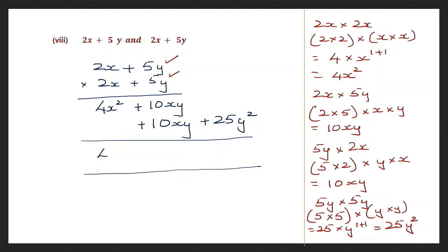So here we have 4x squared, and in the xy column, signs are the same — put the same sign and add: 10 plus 10 is 20xy. And here we write 25y squared.